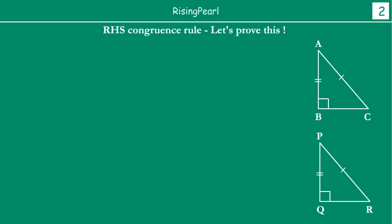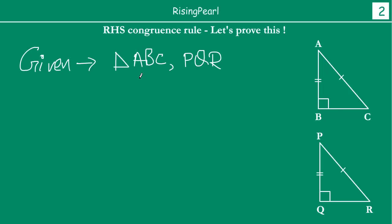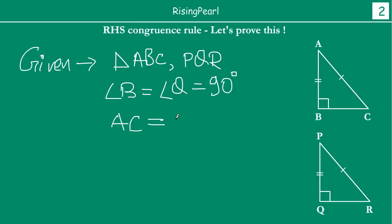Now let us write down what is given. We have two right angle triangles ABC and PQR. Angle B equals angle Q equals 90 degrees, because these are right angle triangles. Hypotenuse AC equals hypotenuse PR. And any one side — let us take AB equals PQ. Given these conditions, we have to prove that the two triangles are congruent.